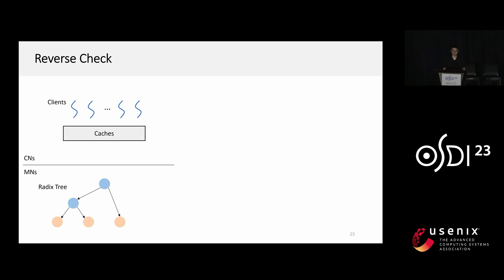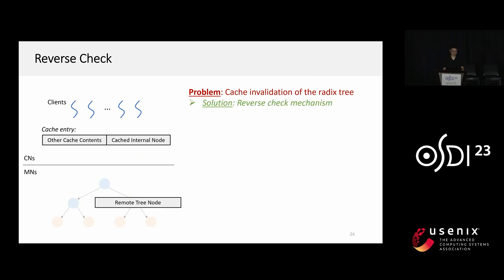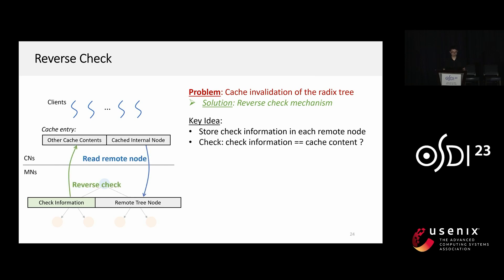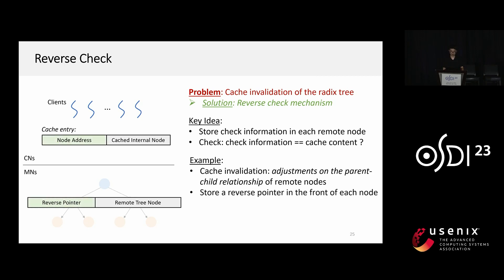The last design of SMART is the reverse track mechanism. Remote structural modifications from other compute nodes invalidate local caches, causing the cache invalidation problem of the radix tree. SMART proposes a reverse track mechanism: chain information is stored in each remote node. When a client reads a remote node according to a cached pointer, a mismatch between the chain information and the cached content indicates an outdated cache entry. For example, a change in the parent-child relationship is a common cache invalidation situation. SMART stores a reverse pointer at the front of each node pointing to its parent; if it does not match the cached address, the cache entry is marked as outdated.